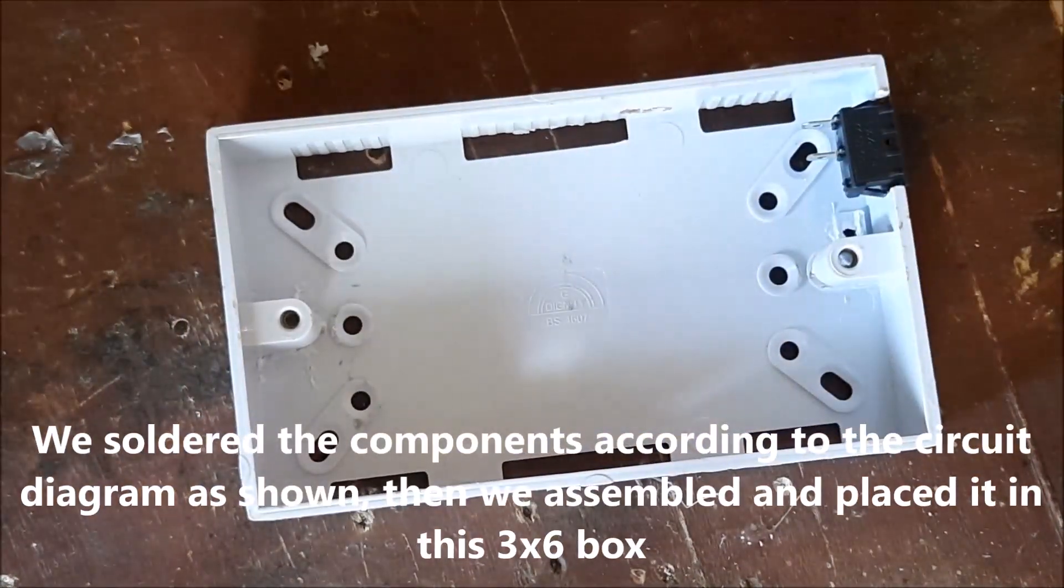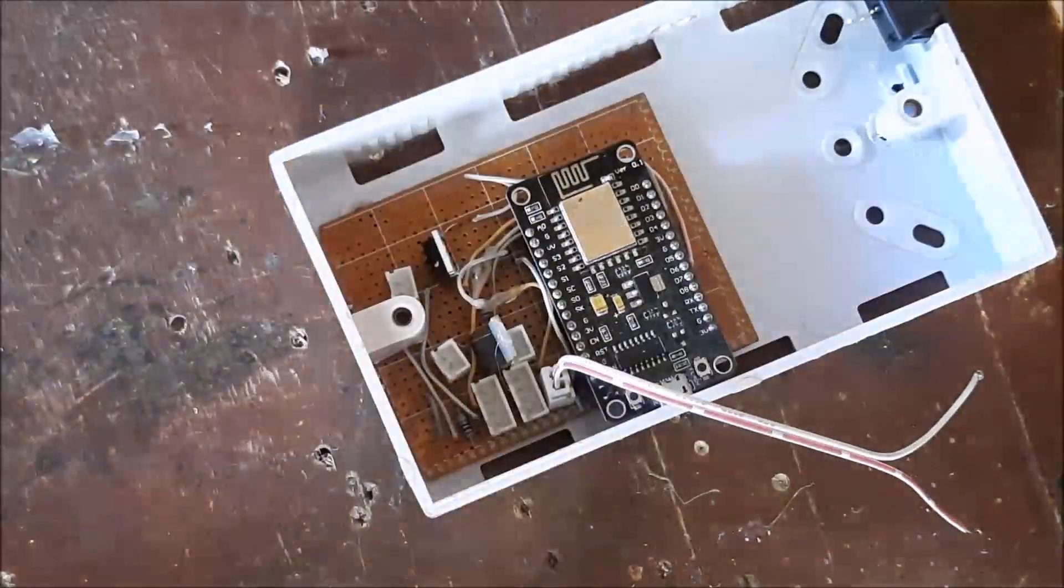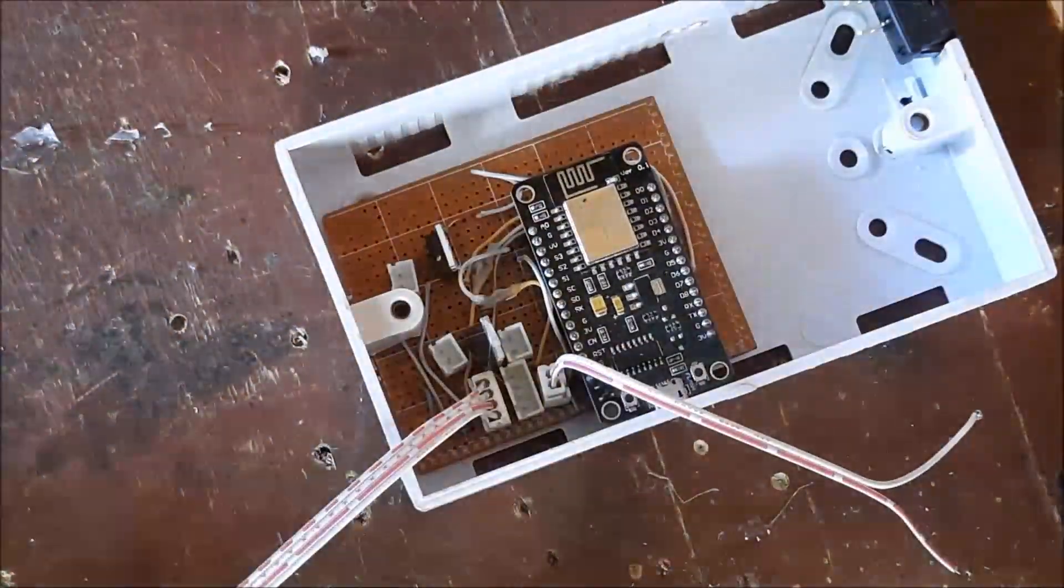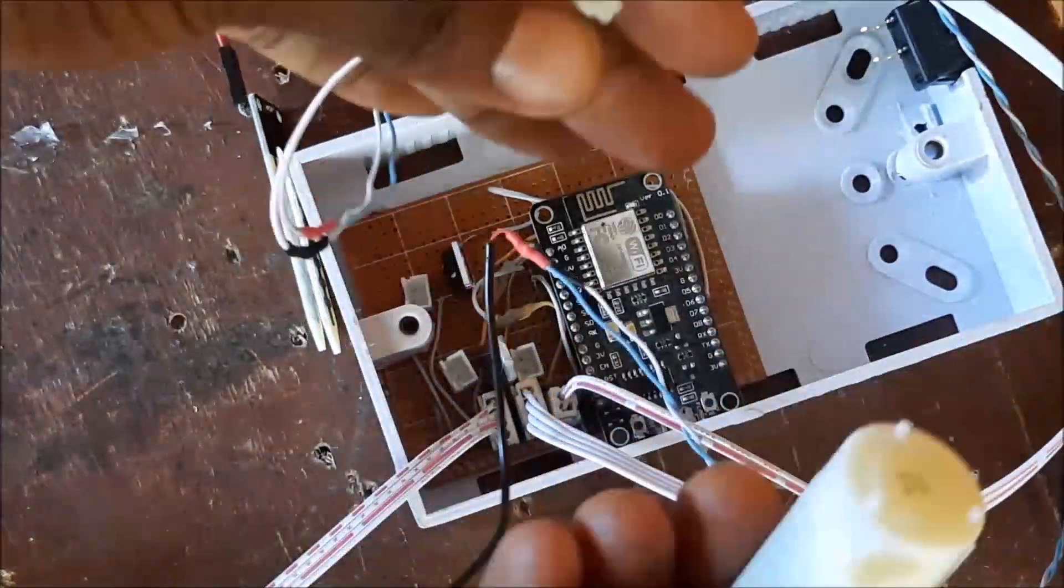We soldered the components according to the circuit diagram as shown, then we assembled and placed it in this 3x6 box. All the components were neatly aligned and those outside of this casing were connected through header wires. Openings were made and the programming port made available for modification of source code.